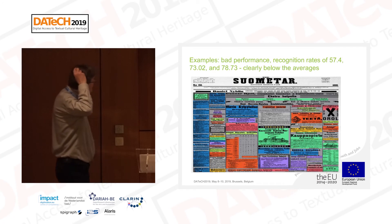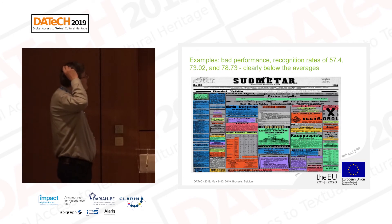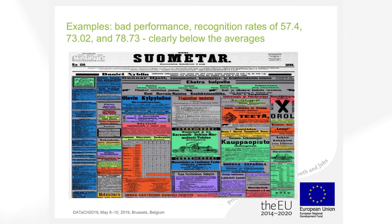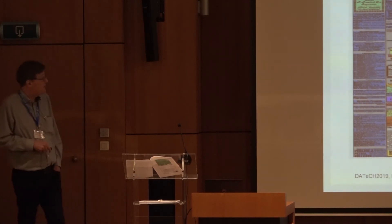And here's an example of a page clearly below the averages — an advertisement page. It's not surprising, because it has lots of complicated content: big images, many tables, including a very large table not well extracted. These pages are complicated even for a human user to extract information from.